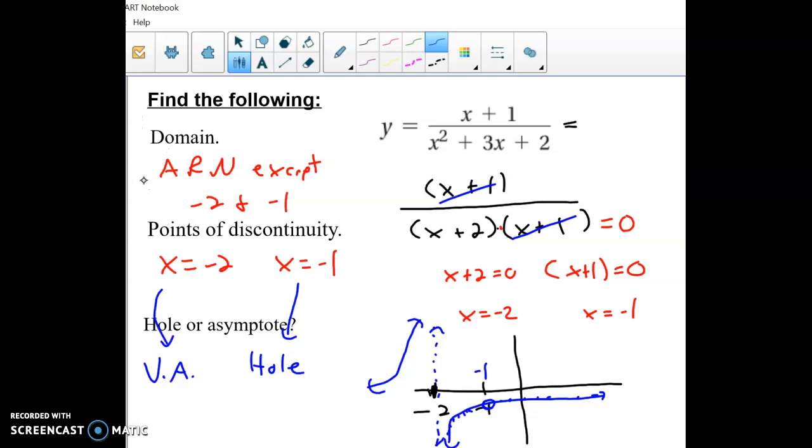All right, so I'm just going to do a couple more examples here about discontinuities and domain, holes and asymptotes. Just a reminder again that the difference between hole and asymptote is if it cancels out up top, then it makes a hole. If there's no match to cancel out up top, then it makes a vertical asymptote.